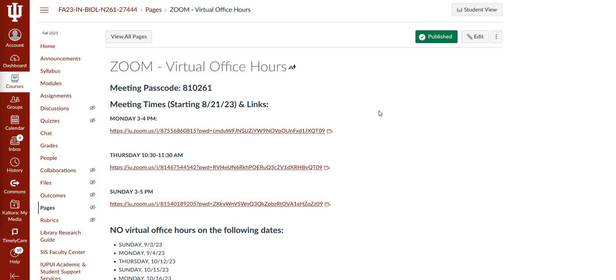It will cover labs 19 through 26. So everything from our cardio lab, where we dissected the heart through the reproductive systems.